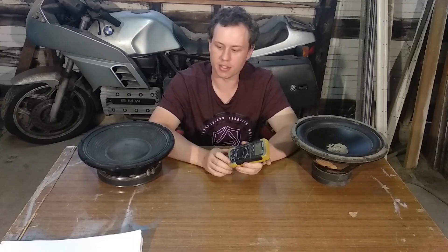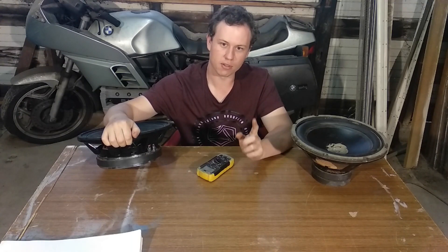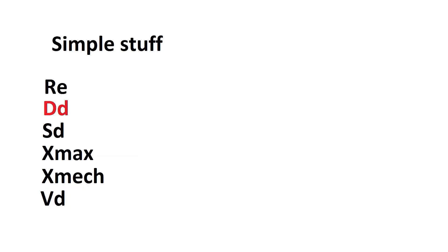First off, the simple specs. RE is the DC resistance of the speaker, measured in ohms. If I were to take this multimeter and connect it to the voice coil of the speaker, I would get a resistance of 7.2 ohms. Please note that resistance is slightly different from impedance — I'll describe that later on.